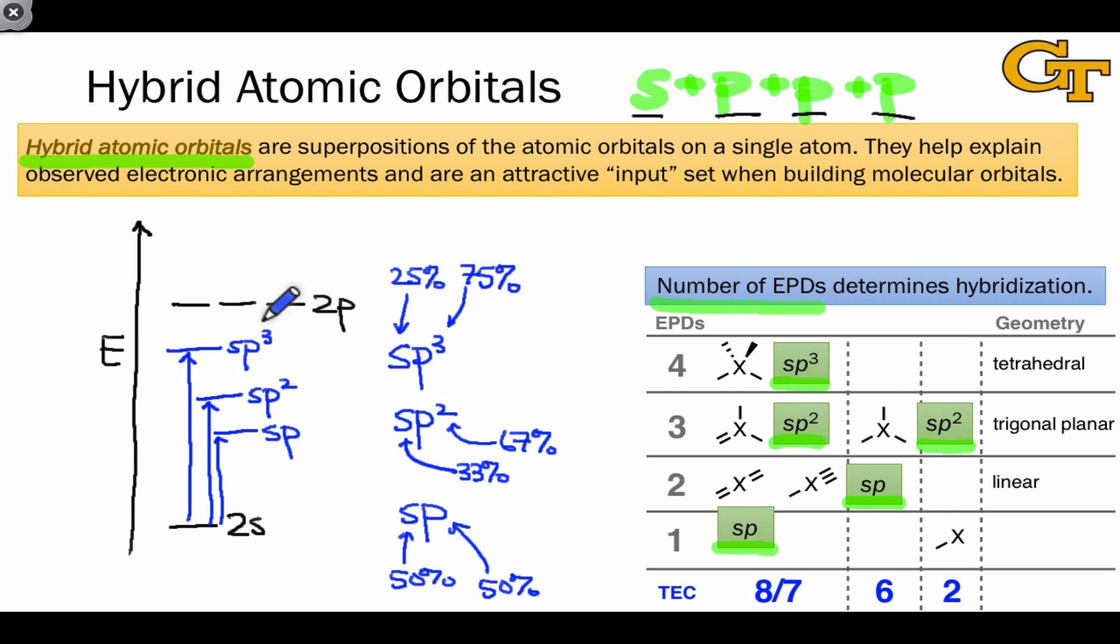We're going to see this trend again, but I just want to note briefly here that what we can conclude from this is that sp3 electrons are higher in energy than sp2 electrons, which are higher in energy than sp electrons. This is a very important conclusion that we're going to return to in later discussions of stability trends.